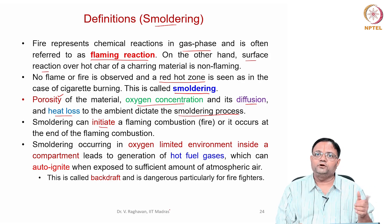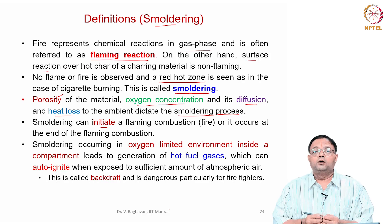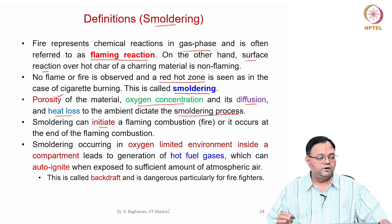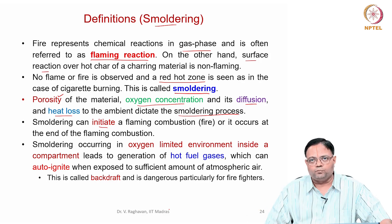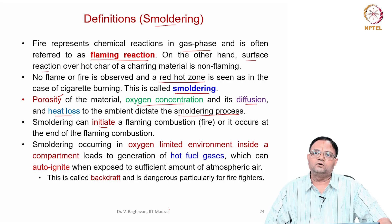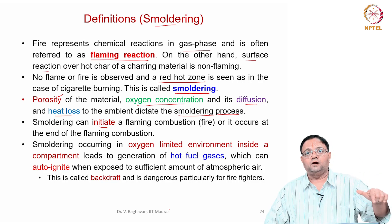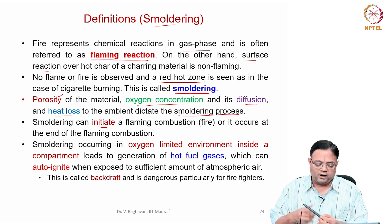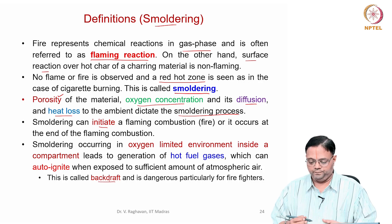As mentioned earlier, auto ignition and smoldering are connected in a scenario like a compartment with poor ventilation where partial burning of some commodity has occurred, causing some hot surfaces and smoldering. This smoldering will cause a lot of fuel vapors to go out, but there is not enough oxygen. The fuel vapors will be hotter but oxygen is not available. If suddenly exposed to a stream of oxygen by opening a window, backdraft occurs. So auto ignition and backdraft can also be caused by smoldering. Smoldering is a type of non-flaming combustion involved in fire in several scenarios.